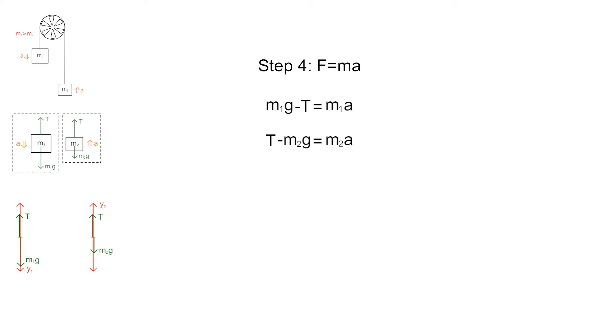For this problem, we're done with the physics. We have two equations and two variables. The variables we would like to solve for are T and A. A little bit of algebra will show that T equals 2 times M1 times M2 times G, all divided by M1 plus M2.